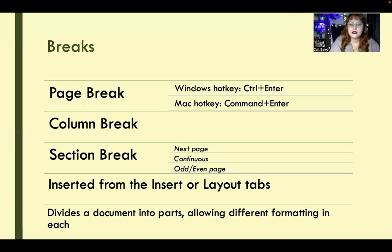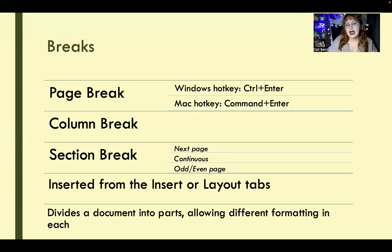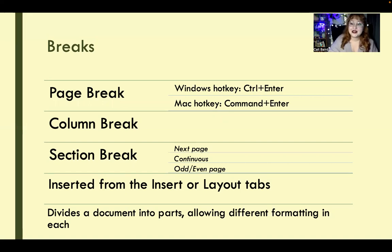Breaks are inserted from either the Insert or Layout tab. I always insert page breaks with my hotkey, which is Control or Command + Enter depending on your operating system. Column breaks happen automatically when you do columns, but you can add one so sections start where you'd like. Section breaks have several different kinds — you can have different formatting in different sections, or label a new section for the e-reader but keep the same formatting. If you have non-printing characters turned on, you'll be able to see your breaks within the document.